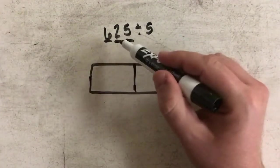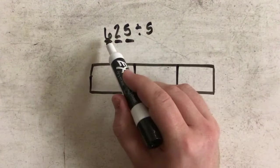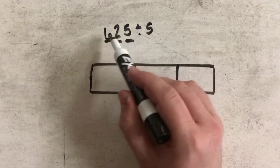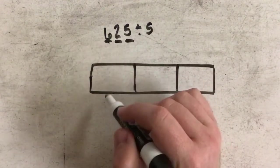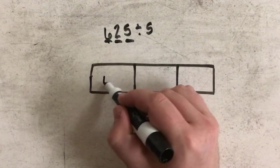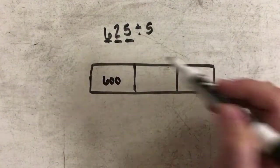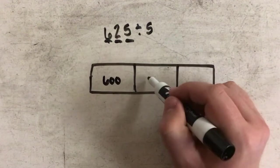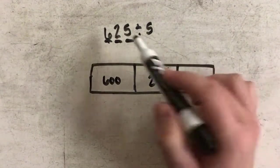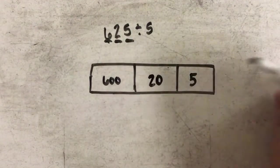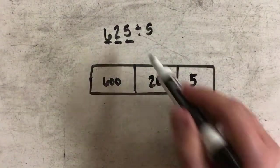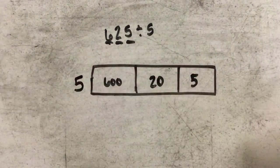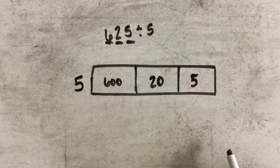And then in each of these boxes, I'm going to place the place value or the value of each of these digits. So the value of the 2 is 20 and the value of the 5 is 5. And again, since I'm dividing by 5, the 5 comes out here. And now I can divide.